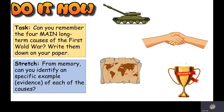We're going to start off with the do it now. I'm just going to introduce the task to you, read out what you need to do, and then if you can pause this for three to five minutes to give yourself a chance to do it, then we will feed back afterwards. The task is: can you remember the four main long-term causes of the First World War? MAIN is an acronym so each letter stands for something — the M, the A, the I, and the N all stand for something. I've given you some pictures there in case they jog your memory. Your stretching challenge is: from memory, can you identify a specific example or piece of evidence for each one of these causes? Pause the video now for three to five minutes.